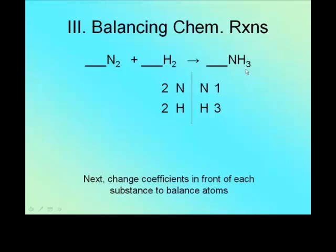If I look on the left, I've got two nitrogen, so that's two. On the right, I only have one nitrogen, and I have three hydrogens. So the first thing to do is get everything in a nice, neat order so you can see how much of each you've got. Next, what we're going to do is we're going to change the coefficients in front of each of the substances to balance the atoms. The number in front is what is called the coefficient.